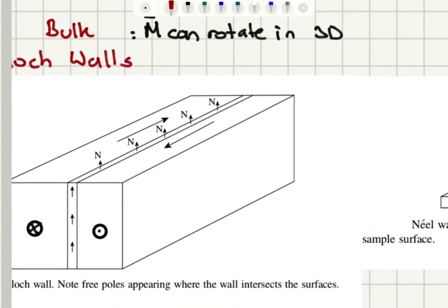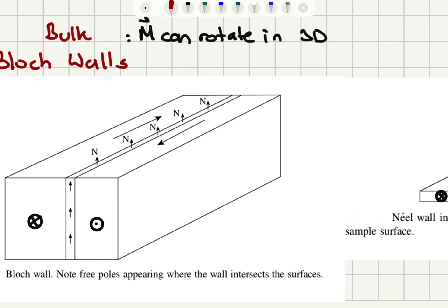In bulk magnetic materials, the magnetization can rotate out of plane. Here you can see it's going into the board and coming out of the board, and you can see that we have three magnetic poles forming at the surface. That's a block type wall.